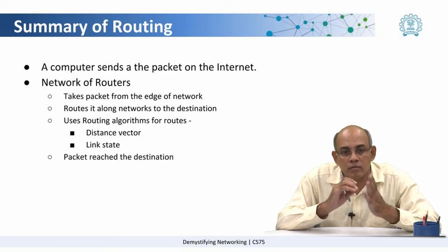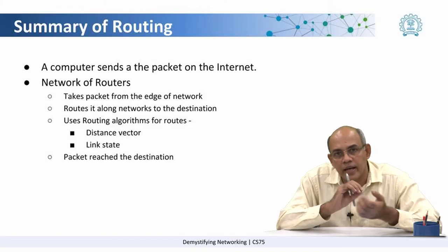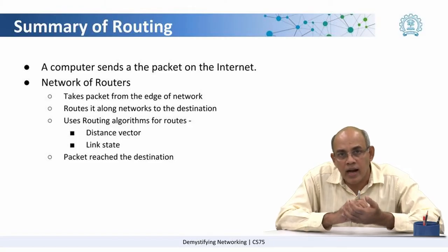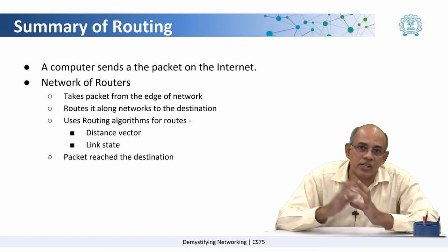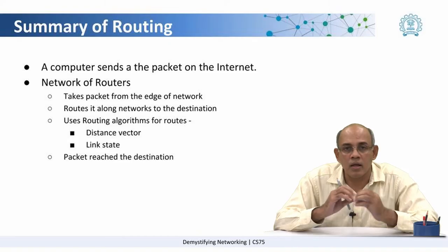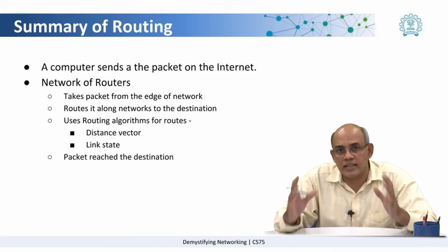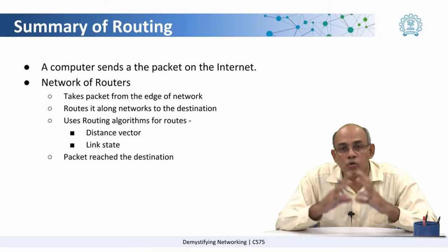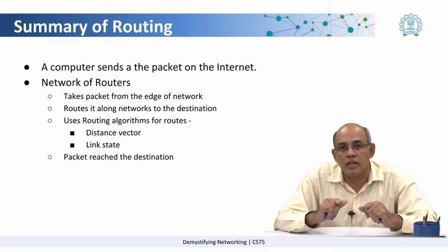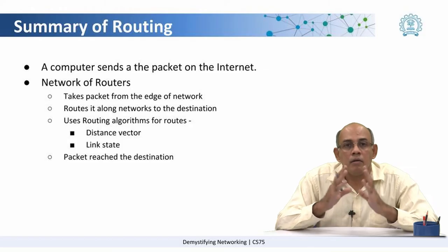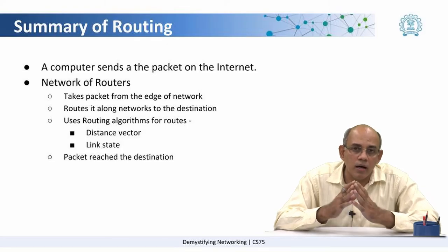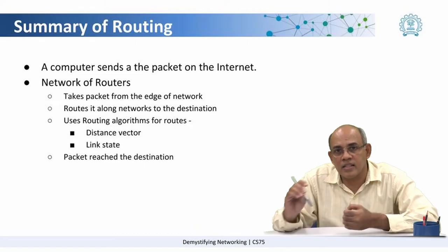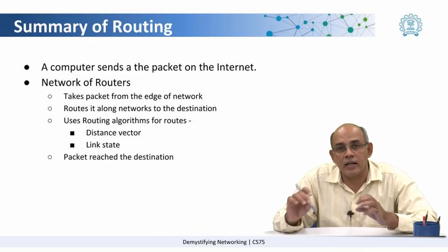Then the router takes it from the edge of the network and ensures that the packet reaches the destination edge of the network. This happens through a network of routers in the internet using different routing algorithms that we have seen, such as distance vector based routing algorithms or link state based routing algorithms. And eventually the packet reaches the destination end on the internet.